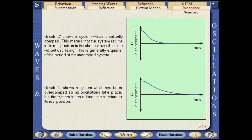Graph C shows a system which is critically damped. This means that the system returns to its rest position in the shortest possible time without oscillating.